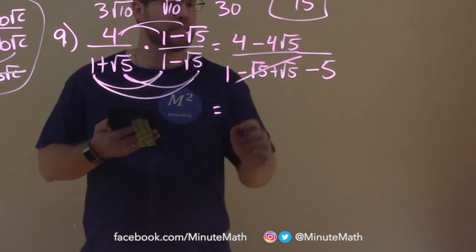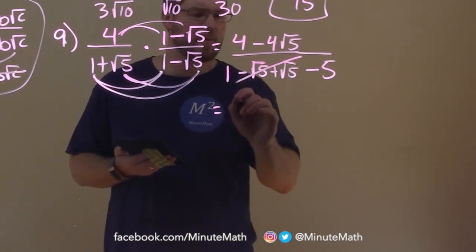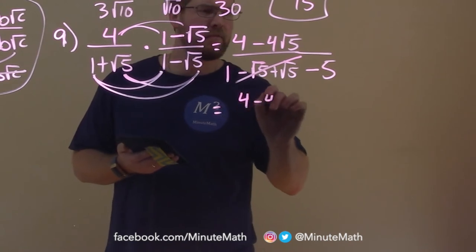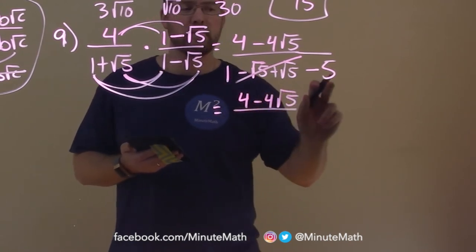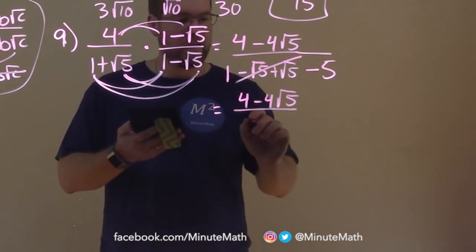So let's look at our numerator. Let's just kind of rewrite this as much as possible. We have 4 minus 4 square root of 5. And then the denominator, we just have 1 minus 5, which is just a minus 4.